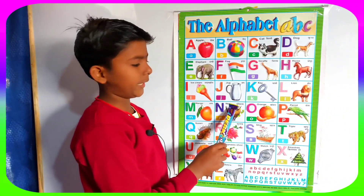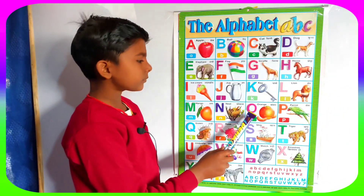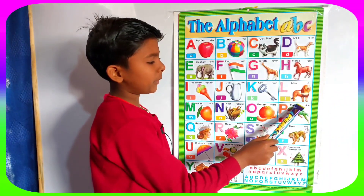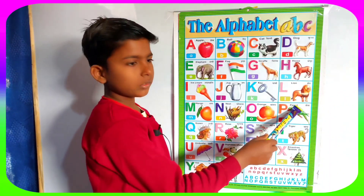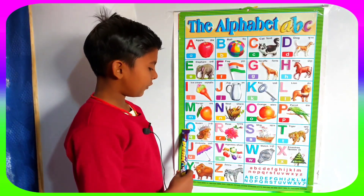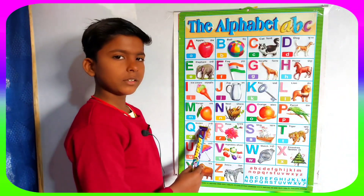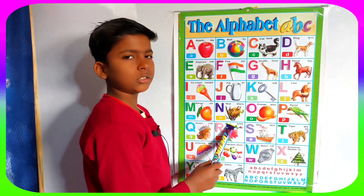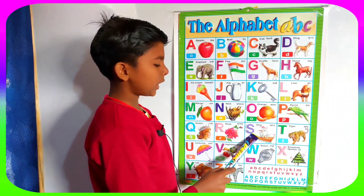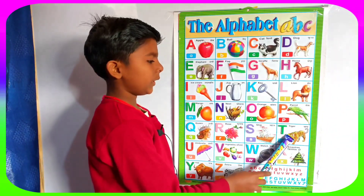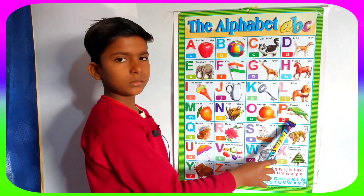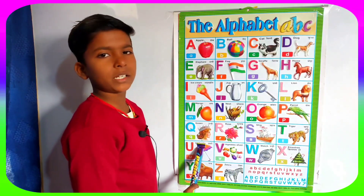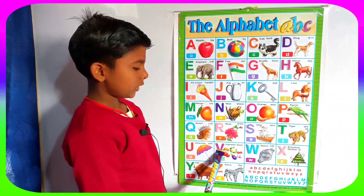N for nest, O for orange, P for parrot, Q for queen, R for rose, S for sheep, T for tiger, U for umbrella.